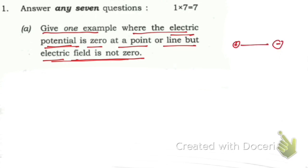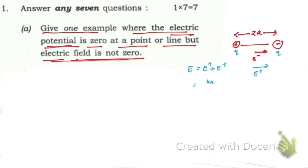The electric field due to the negative charge will be inward and for the positive charge it is outward, so both point in the same direction. The resultant E equals E_positive plus E_negative, which gives kq/a² + kq/a² = 2kq/a². So the electric field is not zero.